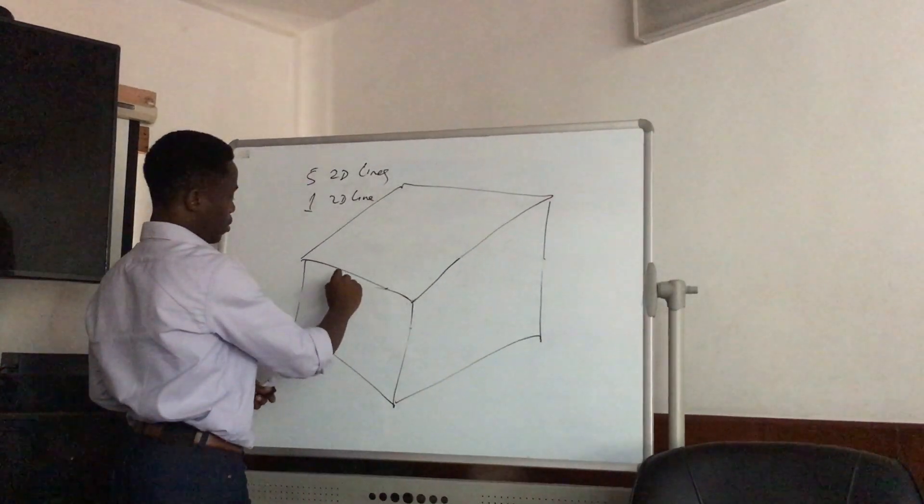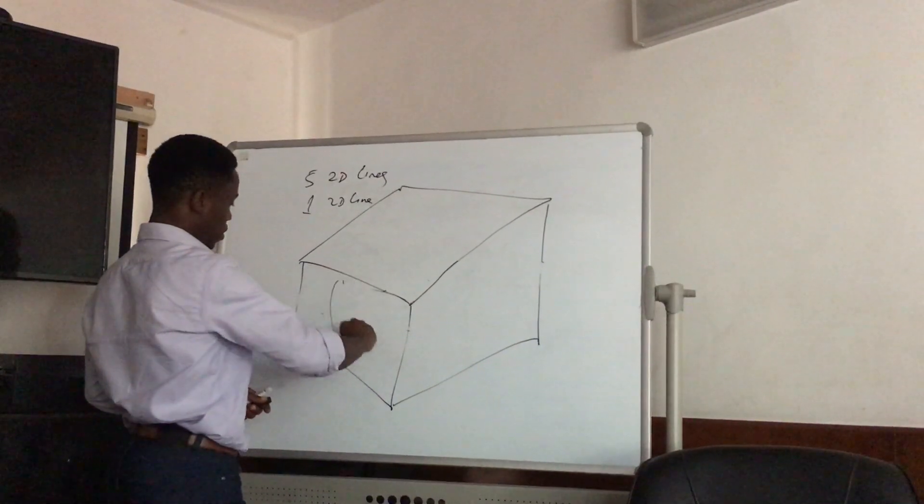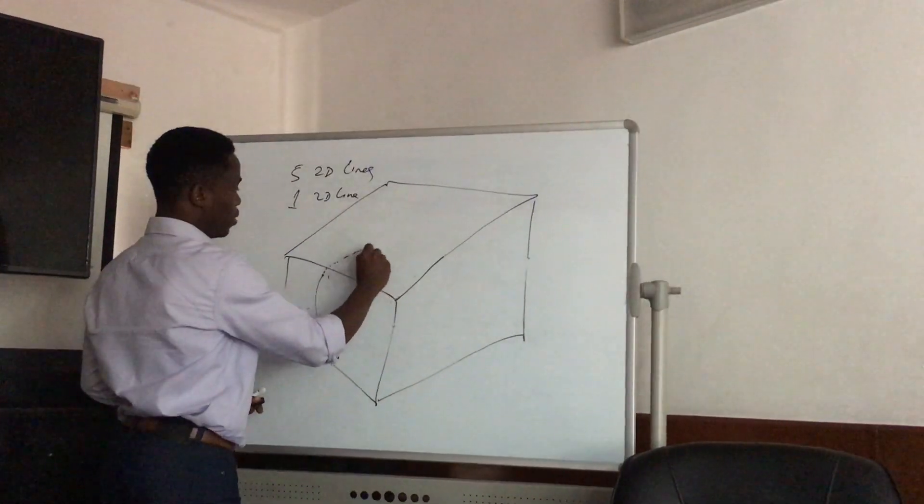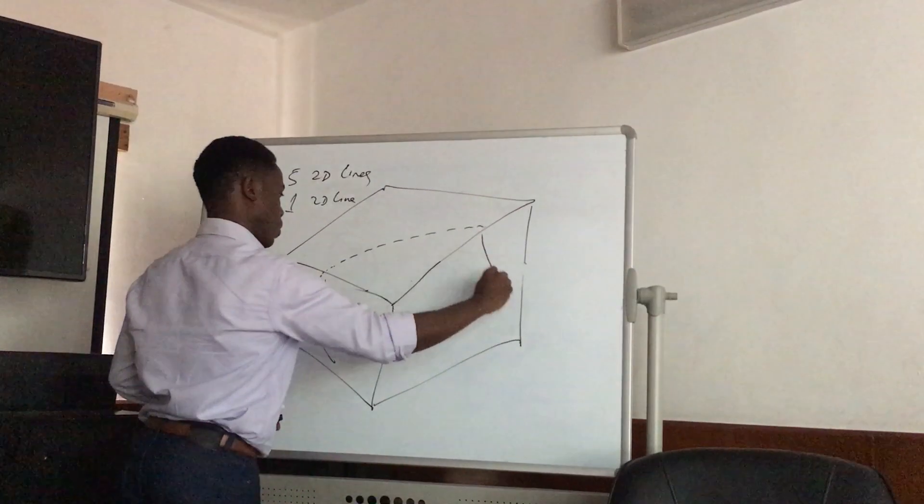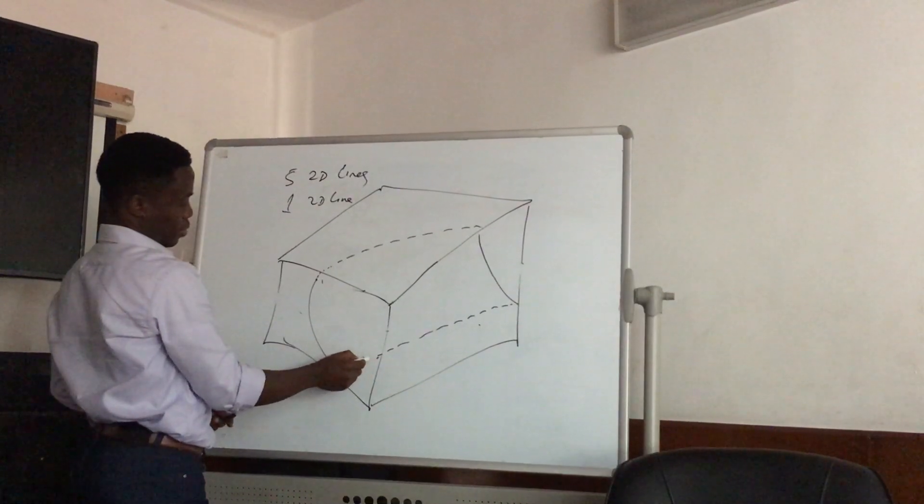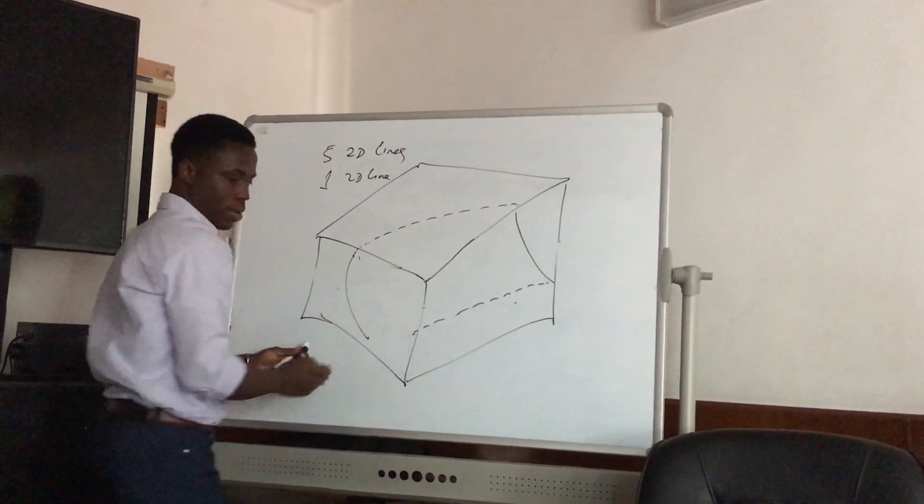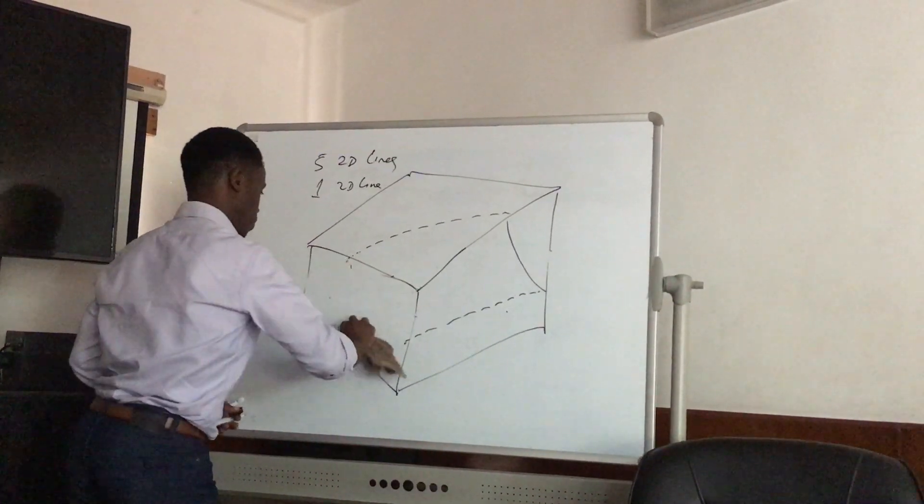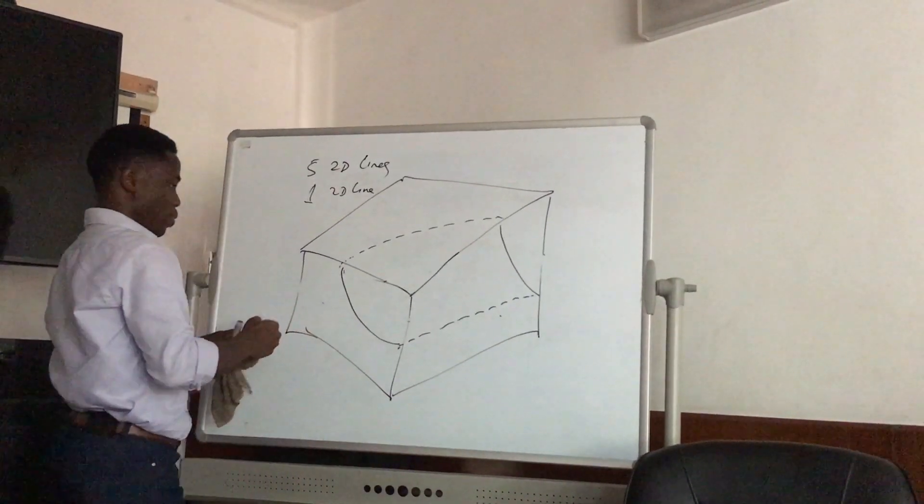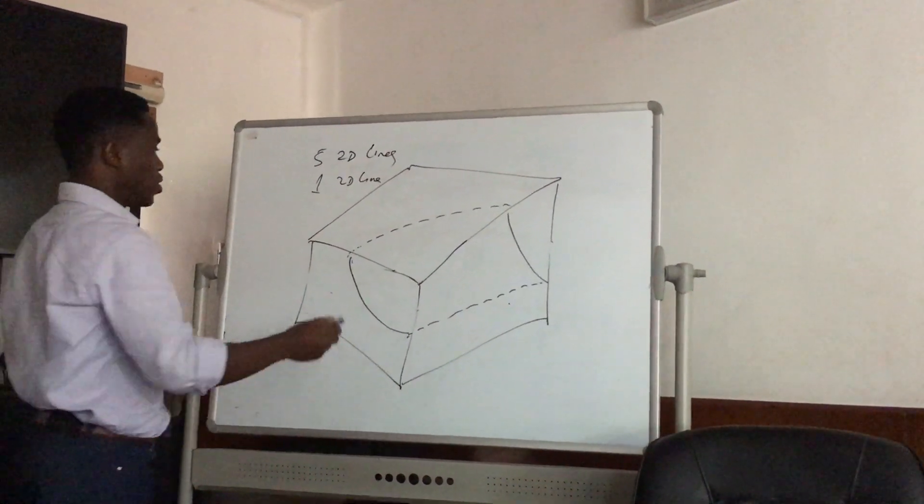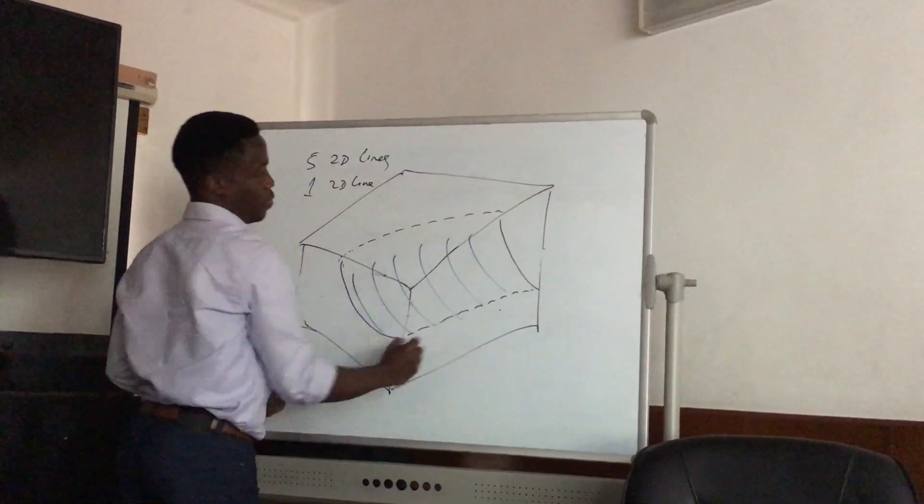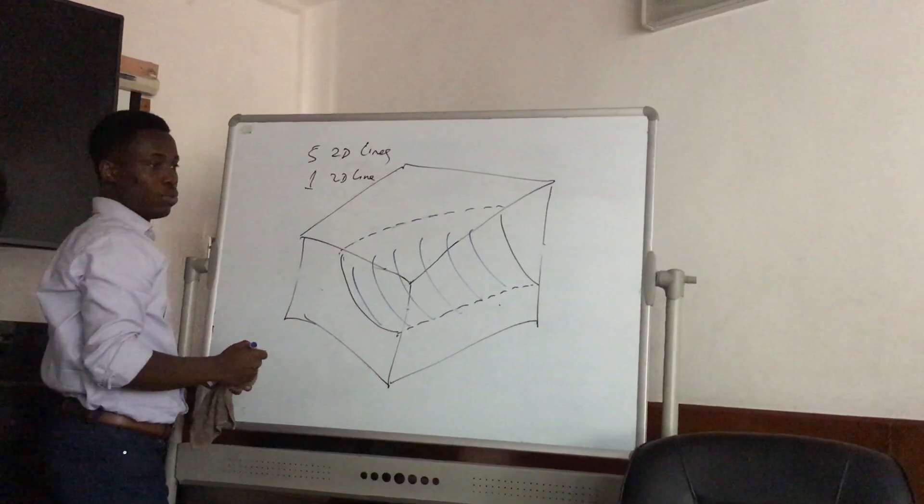So this first example is saying my interest is the stratigraphy. This second one is saying, okay, supposing my interest is now the structure. Let's say I have a fault that does this. It takes over the surface. Such that this is a fault plane.